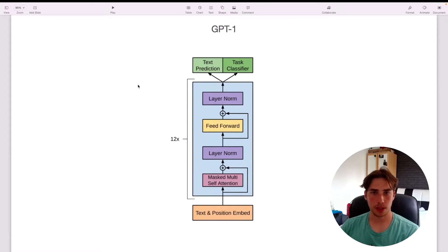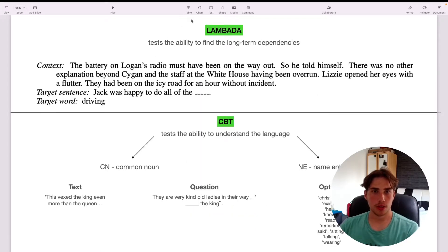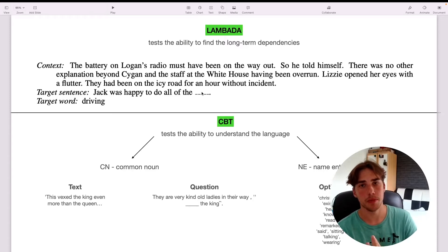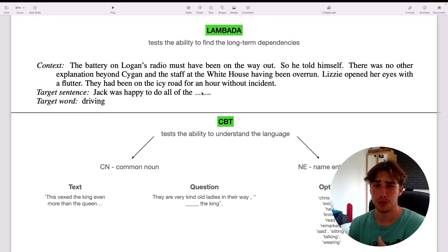First of all, we got the LAMBADA dataset. Let me show you how it looks. LAMBADA is testing the ability to find long-term dependencies. This is one of the examples: we got the context, which is a part of the text from the book, then they have a target sentence, and it needs to predict the last word of the sentence. In terms of language modeling, in my opinion, if it was trained on so much data, it shouldn't be so much of a problem, right?